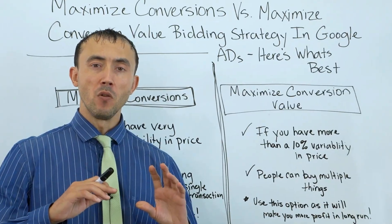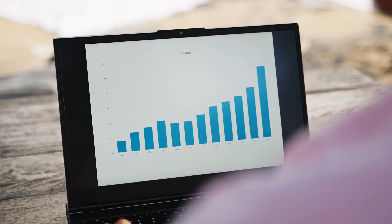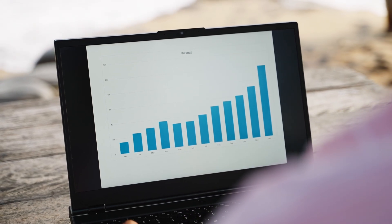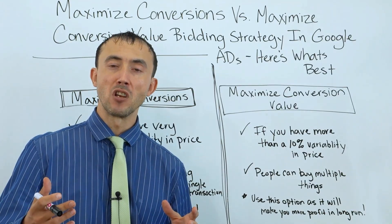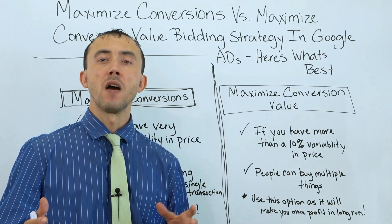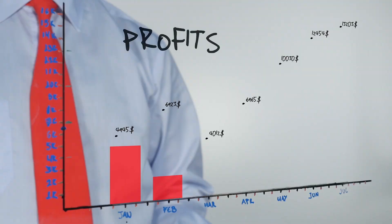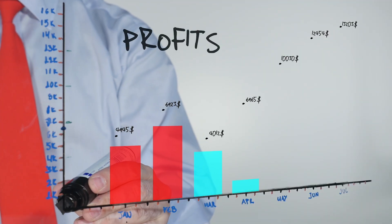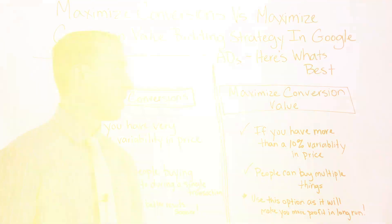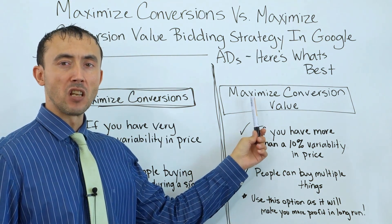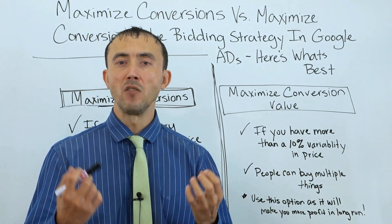If you are like a plumbing services company and typically people buy right away, you could track whether a sale occurs from your lead through the offline conversion tracking process. You could import that revenue into the account, and then the ad account can utilize it to get you more profit moving forward — given that's what we're here for is profit, not just a conversion. In that case, maximize conversion value bidding strategy is going to be better for you because you have actual raw revenue data to work from.